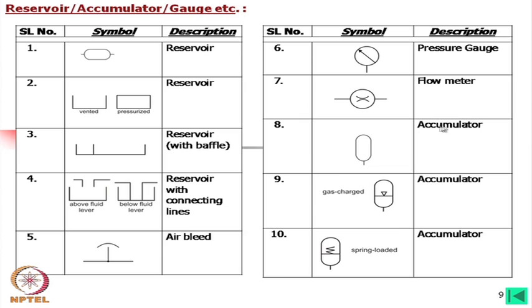An accumulator looks like this — compare the reservoir and accumulator. If you add a line, it becomes a reservoir; without that line, presented like a balloon, it is an accumulator. This is also an accumulator but gas-charged, with gas on one side. If the accumulator is spring loaded, a spring symbol is shown. Accumulator has gas or air on one side and liquid on the other. You can simply use the basic symbol and specify, or use the gas-charged or spring-loaded specific symbols.